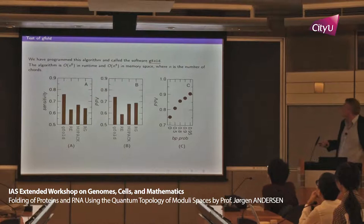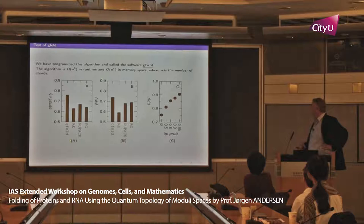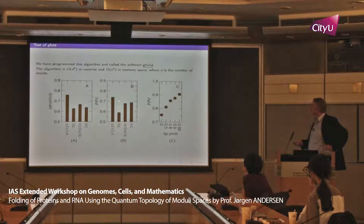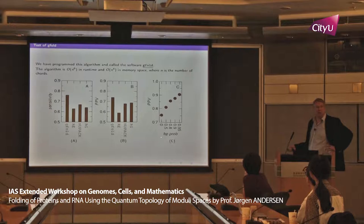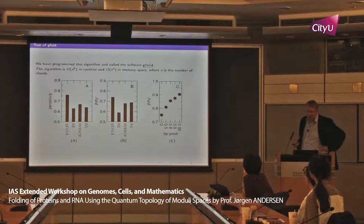We programmed this into an algorithm called GFOLD, with O(n⁶) runtime and O(n⁴) memory. Comparing to the previous three best algorithms for predicting pseudoknots, we beat them in sensitivity by about 10% and correspondingly in positive predictive power. We can compute probabilities for a given site being hydrogen bonded to another given site — when we focus on very high probability bonds, our positive predictive power approaches one.